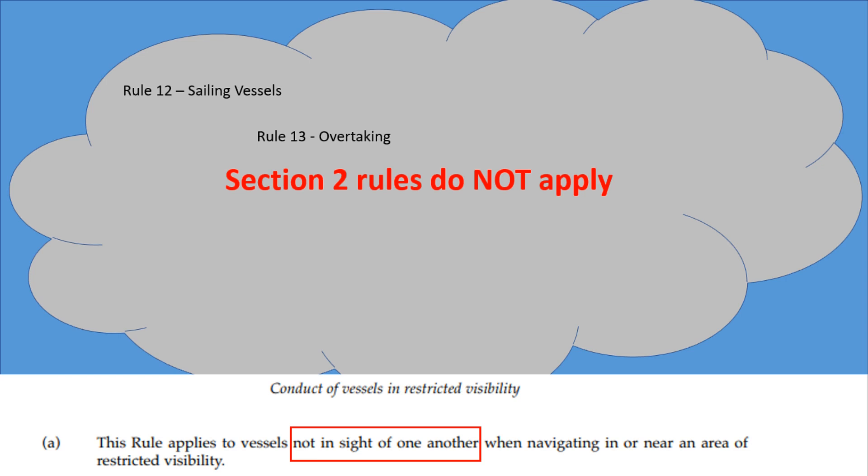Also means Rule 13 Overtaking does not apply in restricted visibility. Everybody is a give way boat. Rule 14 Head-on situations, again, a head-on situation between two power-driven vessels both taking avoiding action by turning to starboard does not apply in restricted visibility. Rule 15 A crossing situation between two power-driven vessels does not apply. That means any power-driven vessel coming from our starboard side, we do not give way to it.